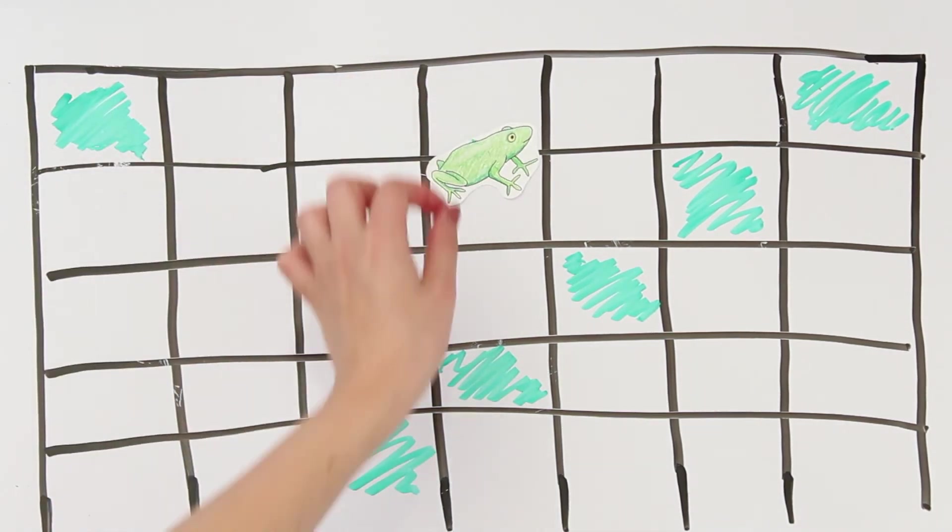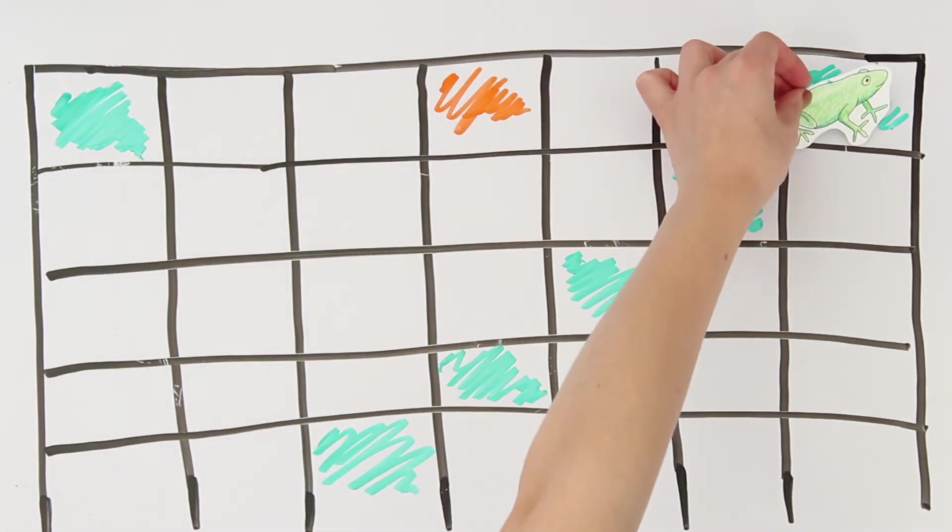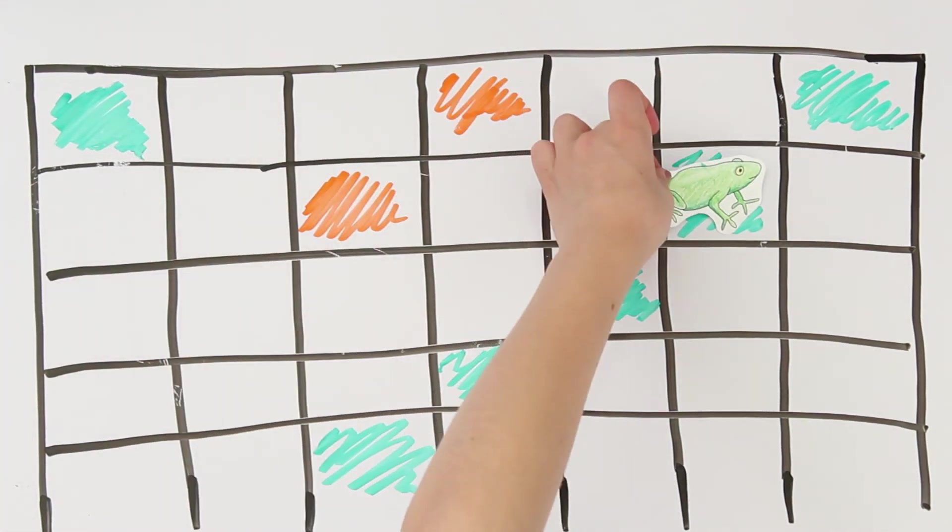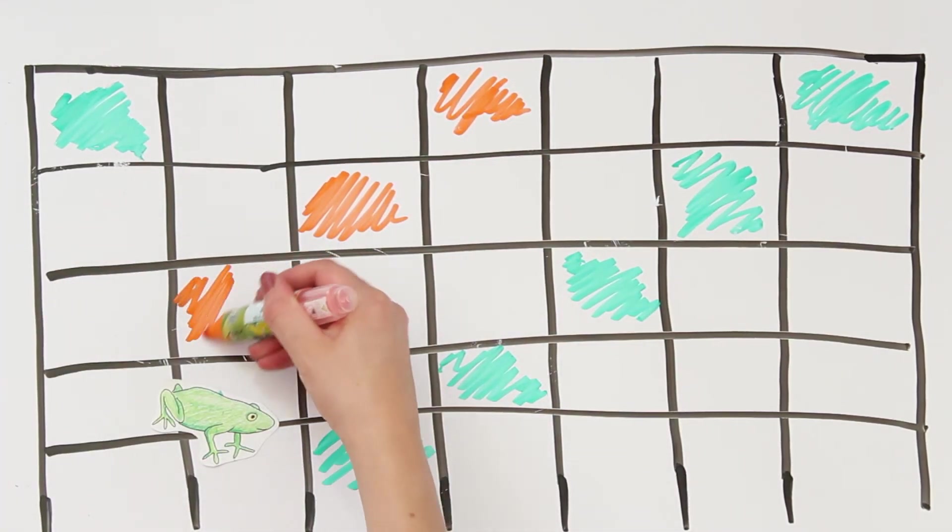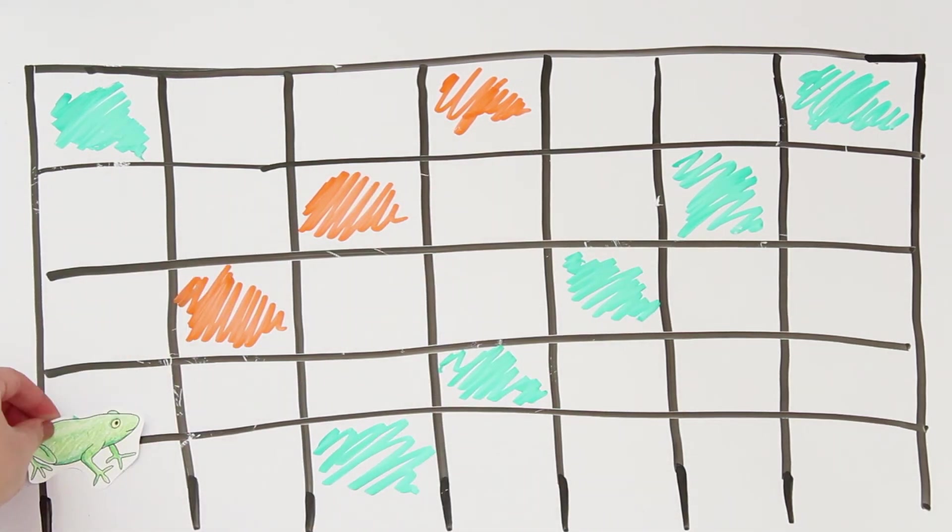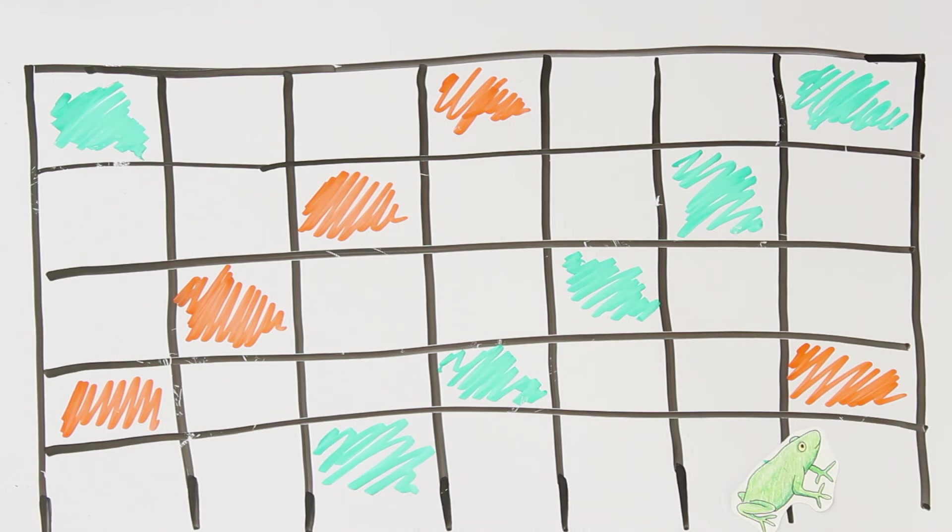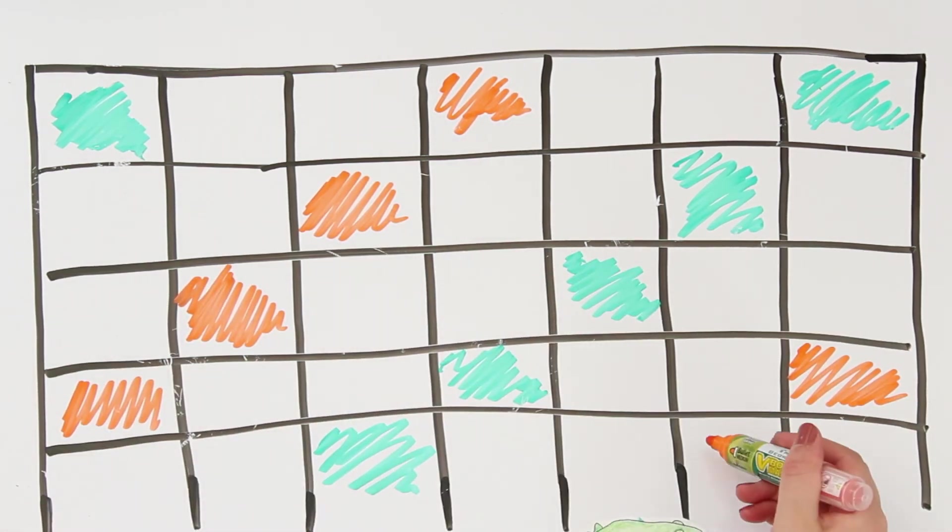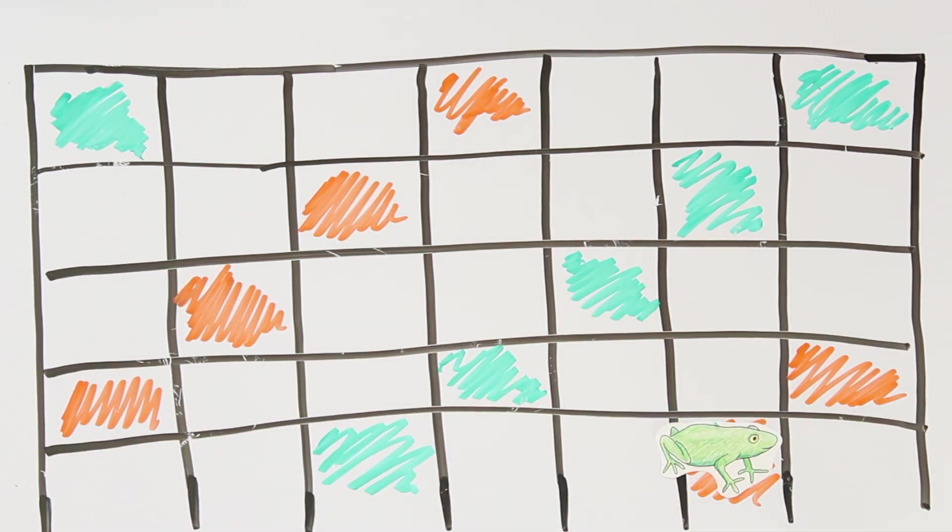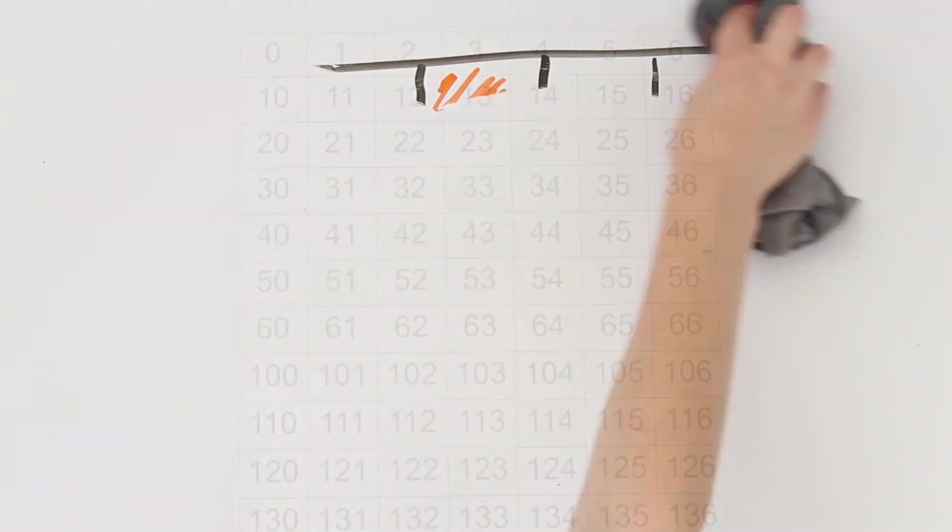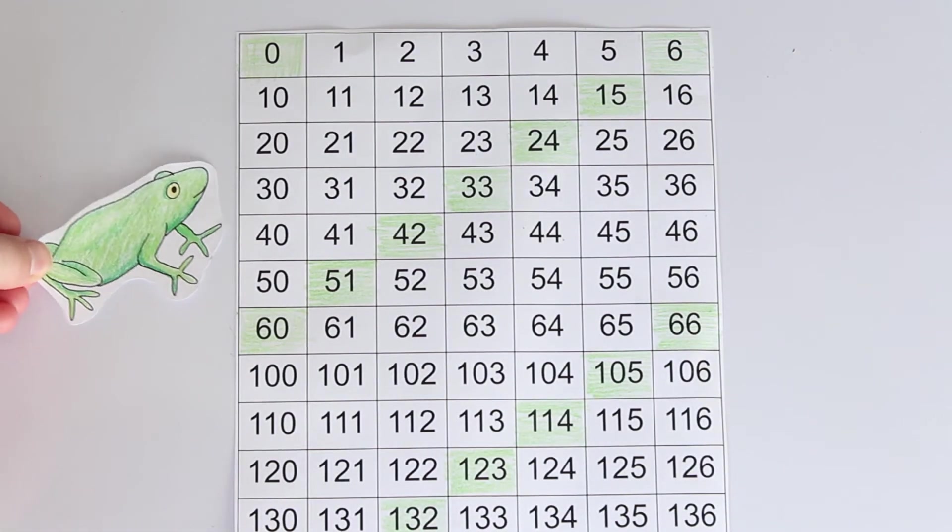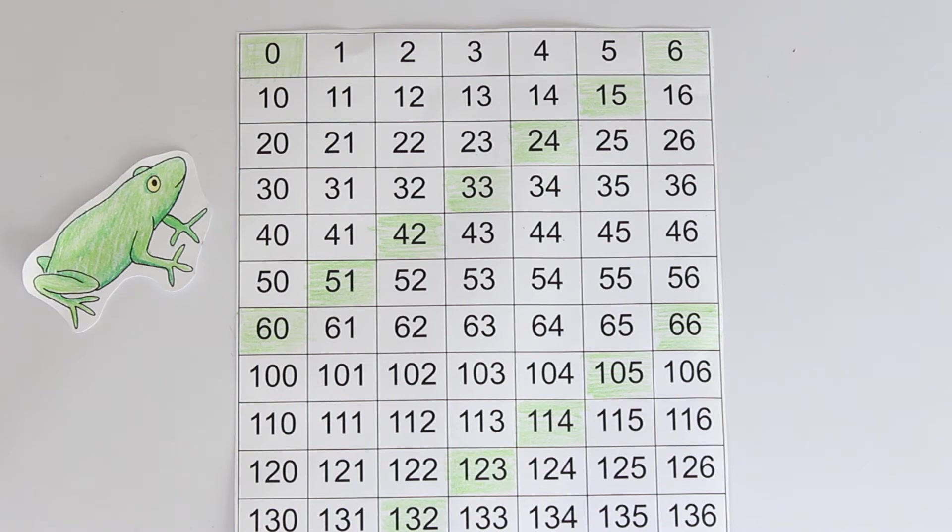A similar thing happens if Mr. Frog leaps over 2 or 3 squares at once. Here we see him making leaps of size 3. After 2 leaps, he lands on a multiple of 6. Since the size of his leaps is constant, his trail leaves behind the same diagonal pattern. These diagonals actually give another proof of the divisibility tricks that we've been talking about.